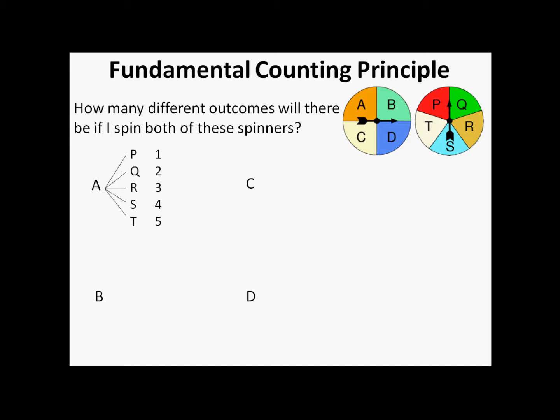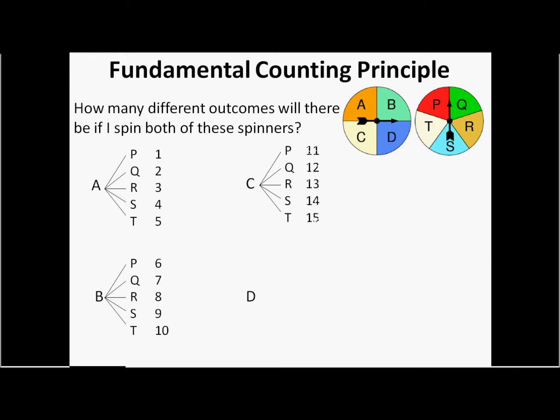So if the first spinner lands on B, it also has five different outcomes. So that makes 6 through 10 as these results, BP, BQ, and so on. If you land on C, there's five little fingers that come off showing that you could have five different outcomes on that other spinner. So we're up to 15 outcomes now. These are all different outcomes.